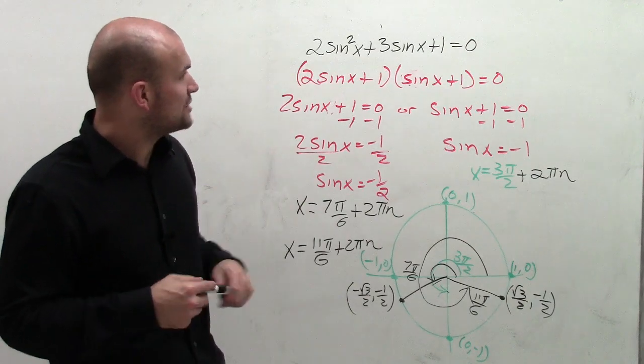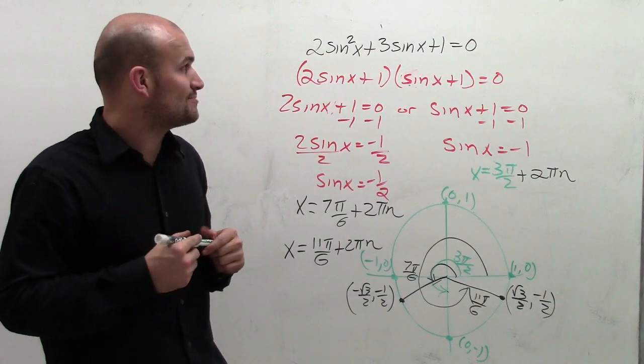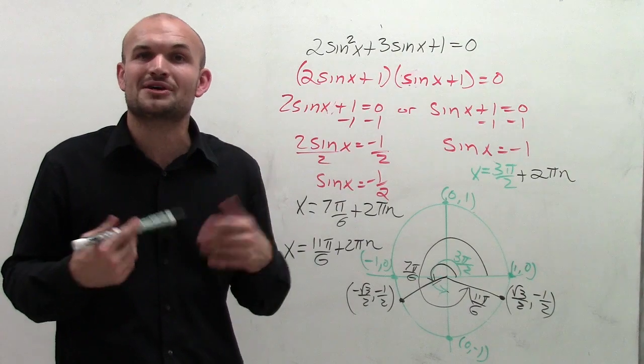So there you go, ladies and gentlemen. That's how you solve for 2 sine squared of x plus 3 sine of x plus 1 equals 0. Thanks.